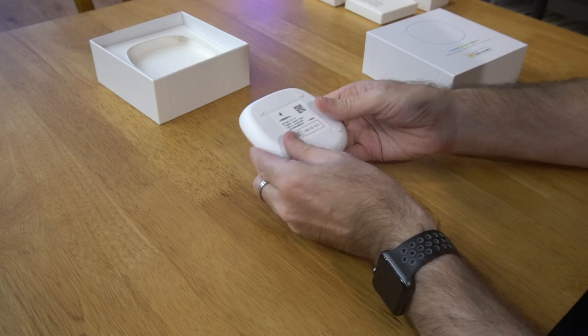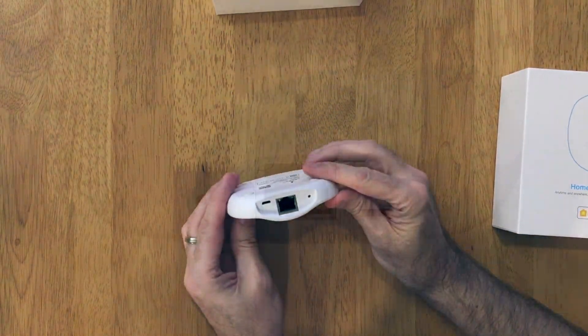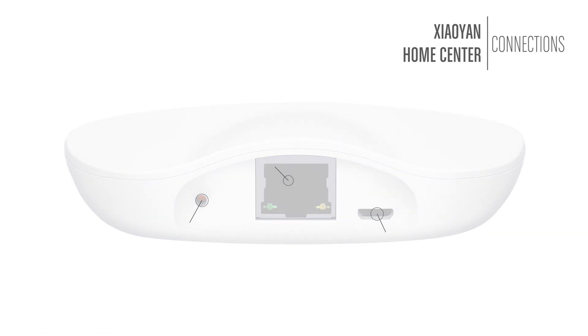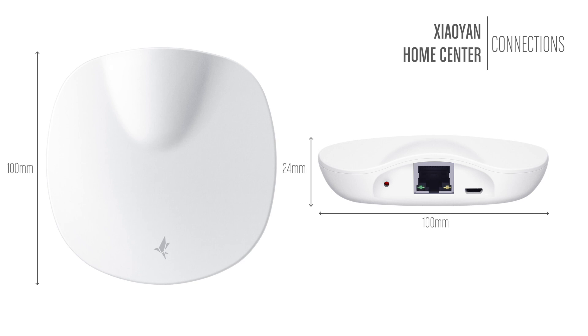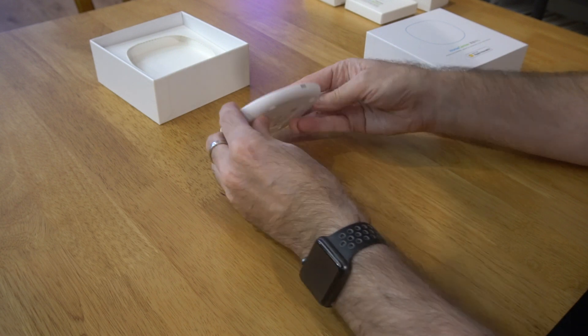On the base of the device you've got the HomeKit code, and on the rear you've got the connections: the Ethernet port, USB power, and a reset button. Dimensions for the device are 100 by 100 by 24 millimeters high. All in all, it's a very unobtrusive device.